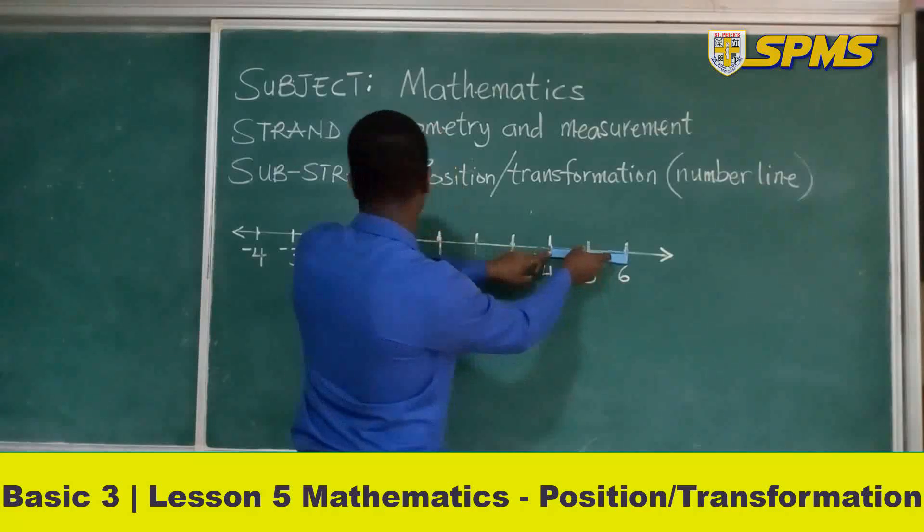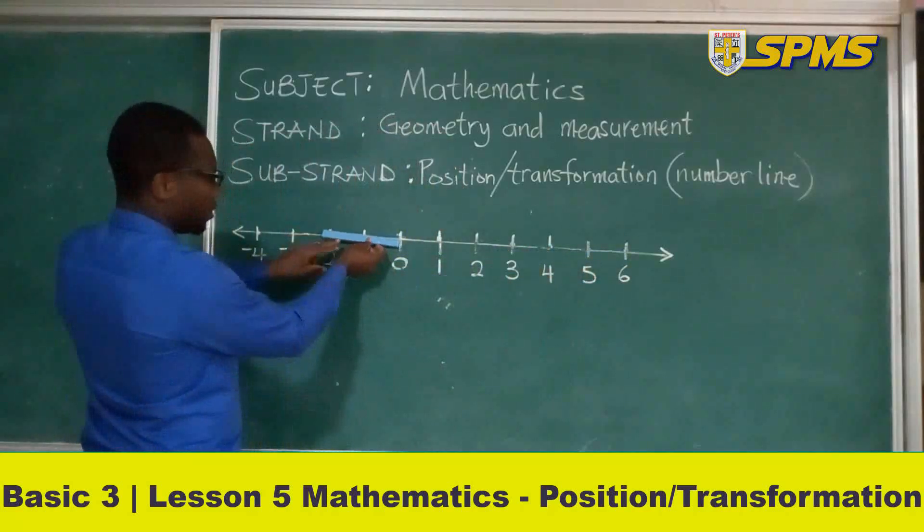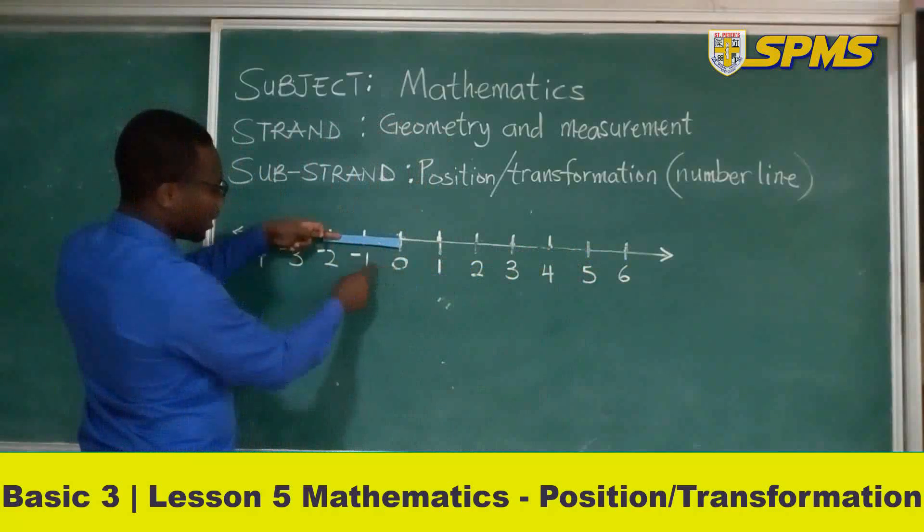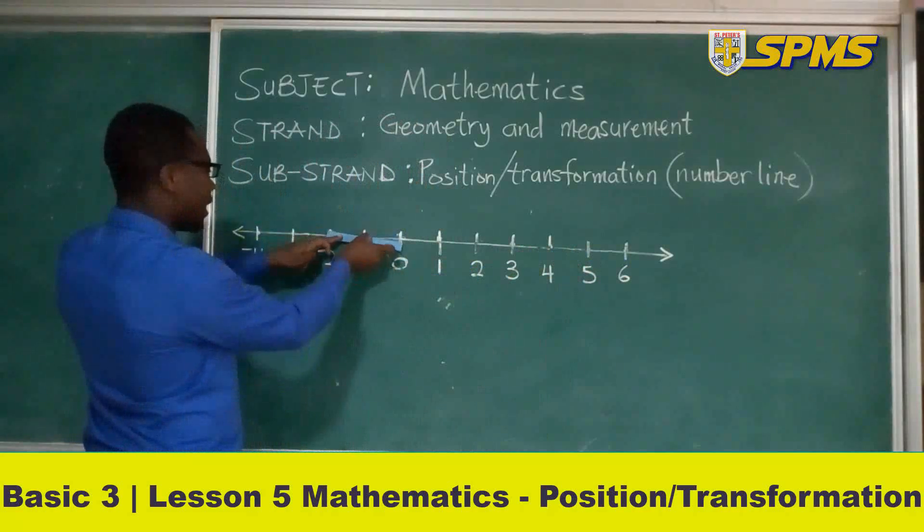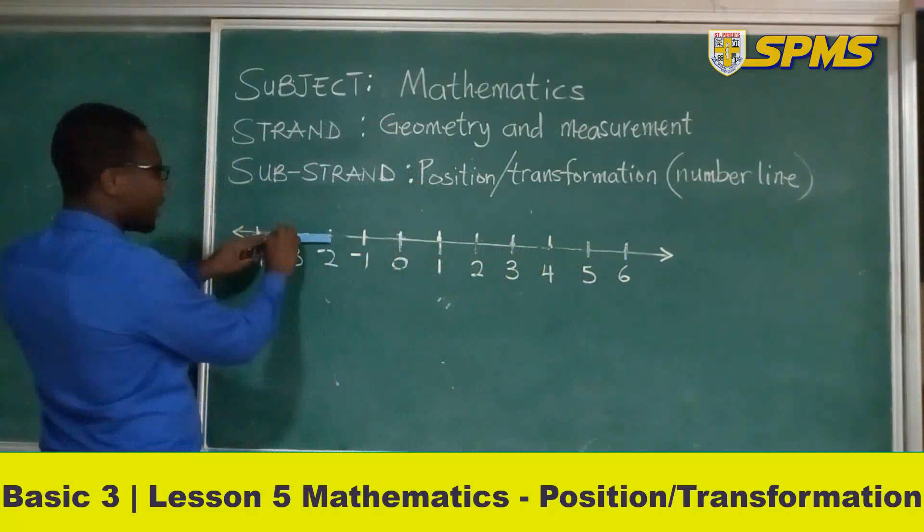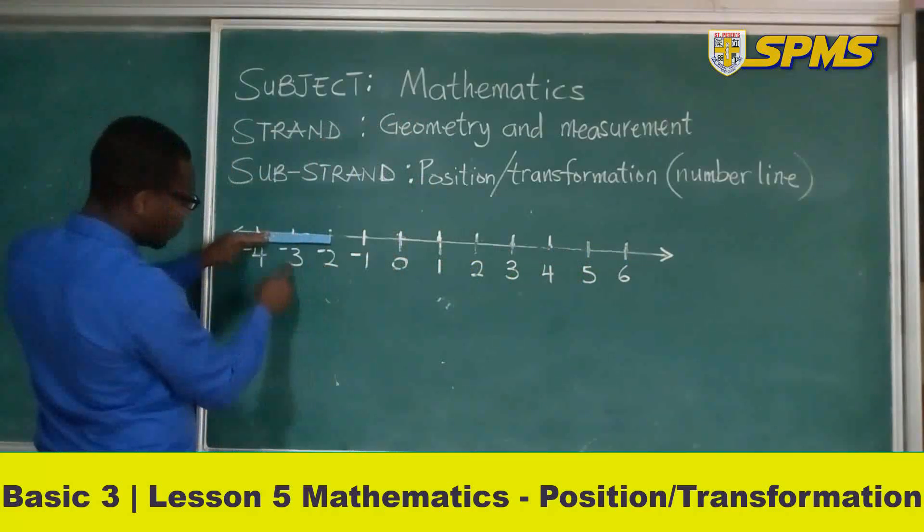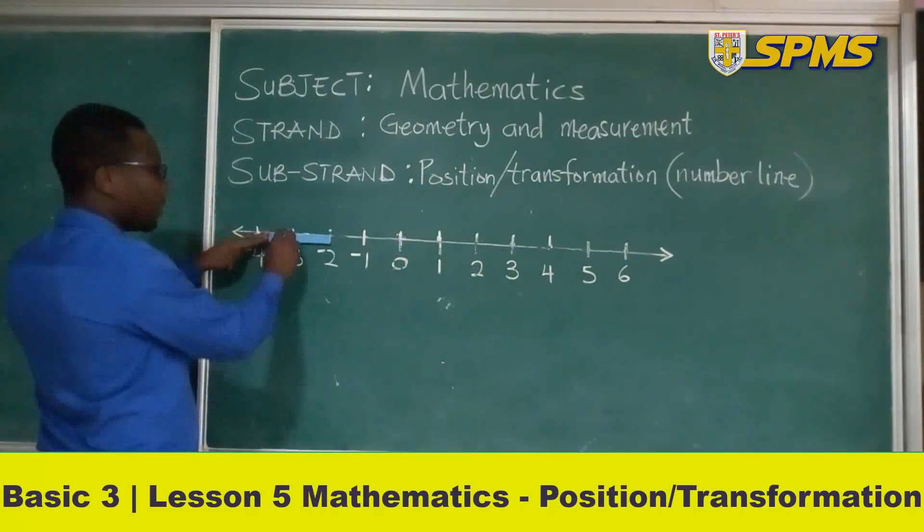When we come to the negatives, the distance between 0 and negative 2 is the same as the distance between negative 2 and negative 4.